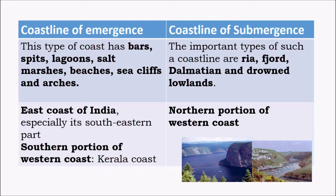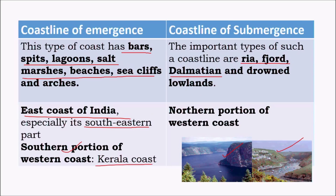The main landforms found along coastlines of emergence include bars, spits, lagoons, salt marshes, beaches, and sea cliffs. Along coastlines of submergence, landforms include rias, fjords, and Dalmatian coastlines. A ria is a smaller version of a fjord. The coastline of emergence is mainly found along the east coast of India, especially near Tamil Nadu, and along parts of the southern western coastline such as the Kerala coast. The coastline of submergence is found along the northwestern coast — the Mumbai–Gujarat coast — and the Rann of Kutch is an example.